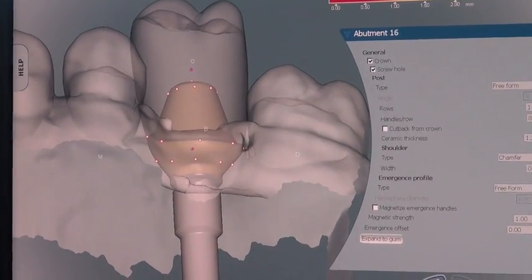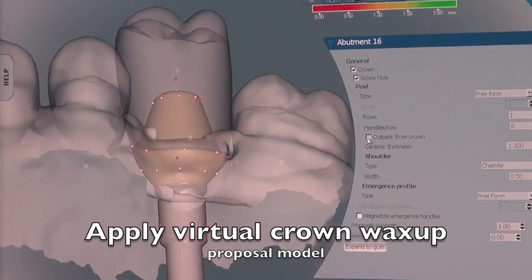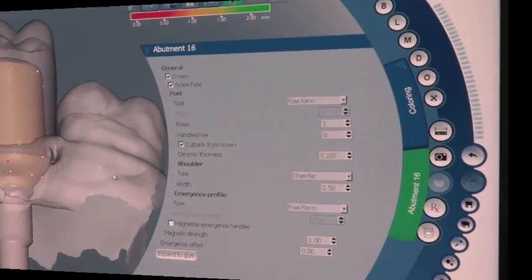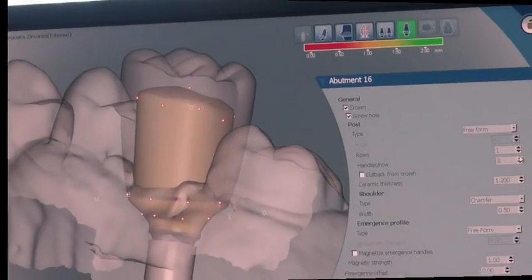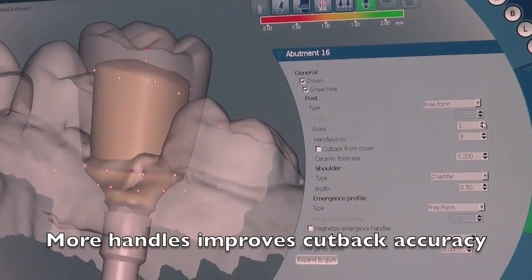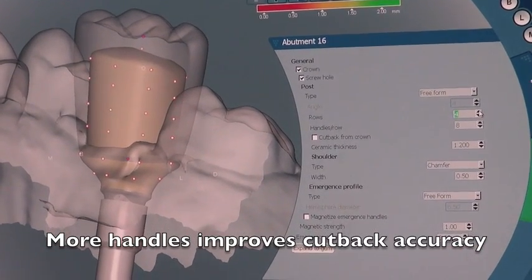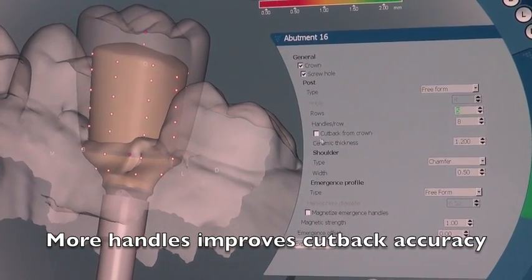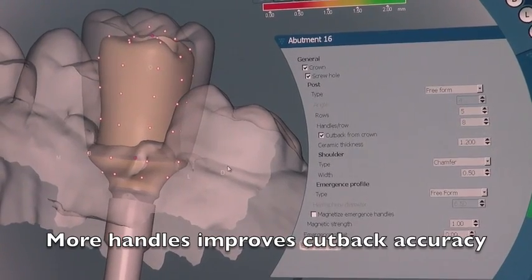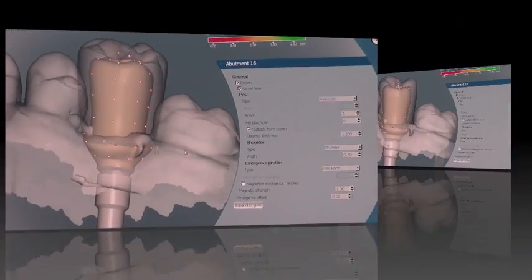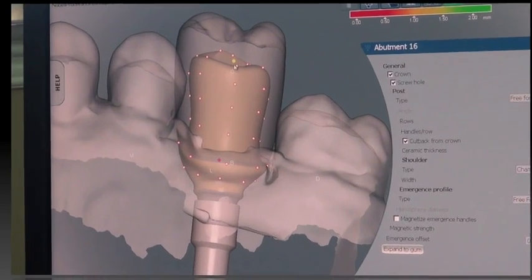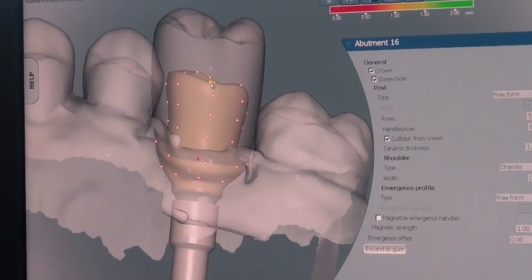Once we get everything designed below the gum, now we can start to work above the gum line. In this particular case, Mike likes to create a crown. They make the crown nice and high in the computer software, but what he likes to do is increase the number of handles and then go up and he's going to pull this down, so it's a really quick way to make a really nice abutment.